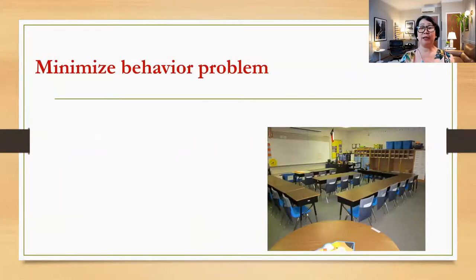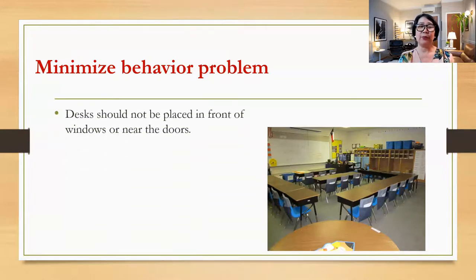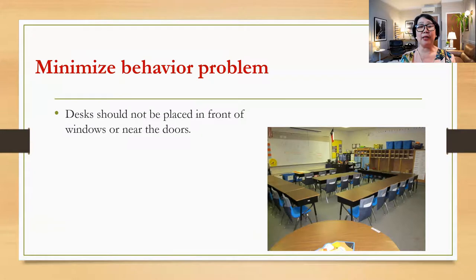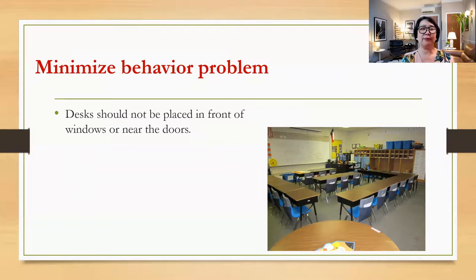How are we going to minimize behavior problems through classroom organization? First, desks should not be placed in front of windows or near the doors. If desks are near doors, when kids or anyone are walking in the corridor or hallway, students tend to look and see what's happening, and they get distracted. If desks are near a window where students can see outside, their tendency is to look outside instead of at you and listening. So we should not place desks near windows or doors because of those distractions — students will lose their attention.